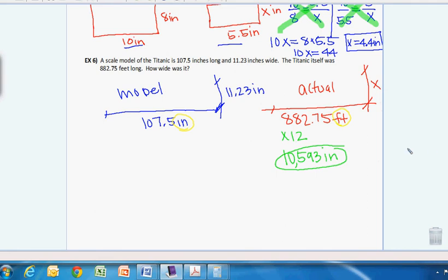So I'm going to keep, I'll keep with my colors, and this time I'll set it up with the information of the model equal to the information of the actual. So I'm going to start with the length. I have 107.5 compared to 11.23. And then my actual, I started with the length, so I'm going to go again with this length.